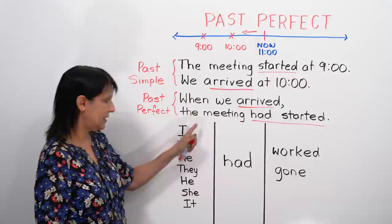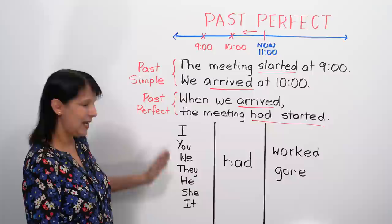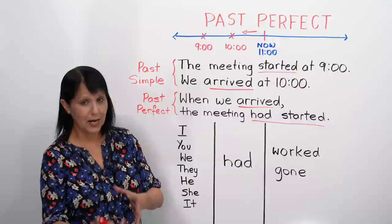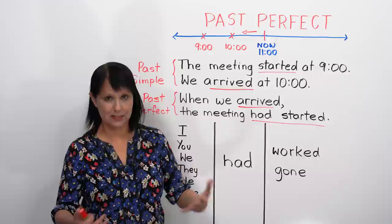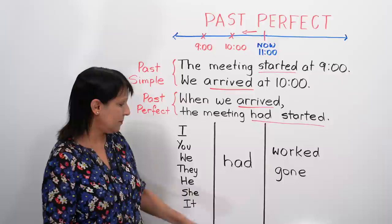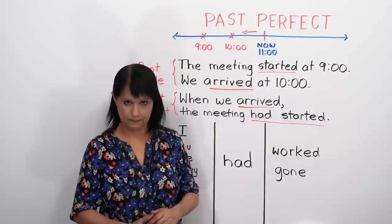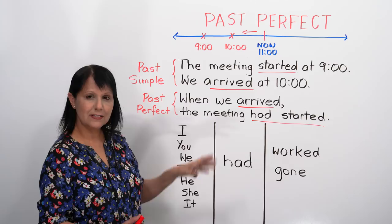Now let's look very quickly at the structure of this tense. It's easy. We have the subject — I, you, we, they, he, she, it — and with all of them, you only have to learn one helping verb: had. It's the verb have in the past tense. Then we add the third form of the verb, or what is called the past participle. I've written a few examples: I had worked — that's if it's a regular verb. These are the basics, and we'll understand more as we go along.